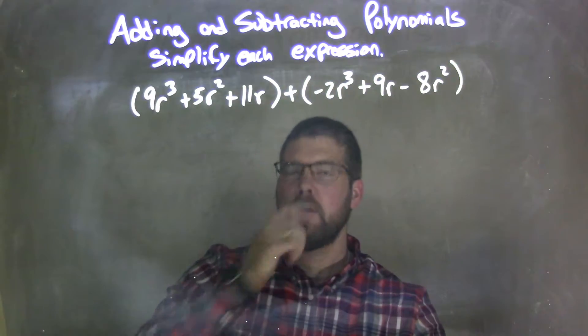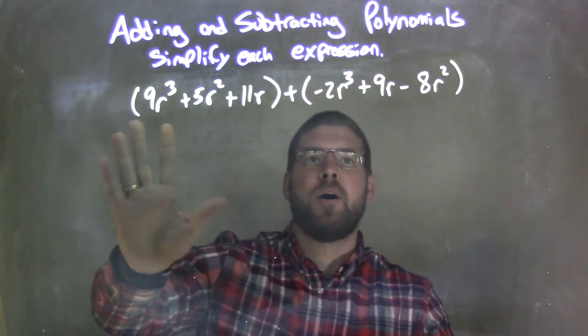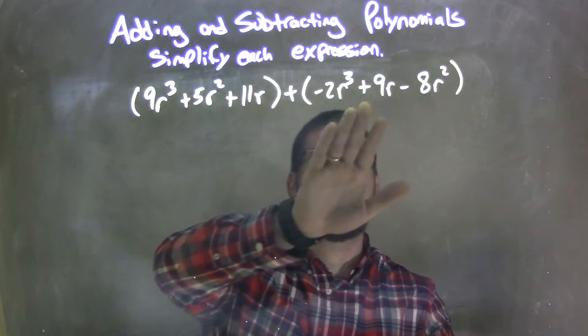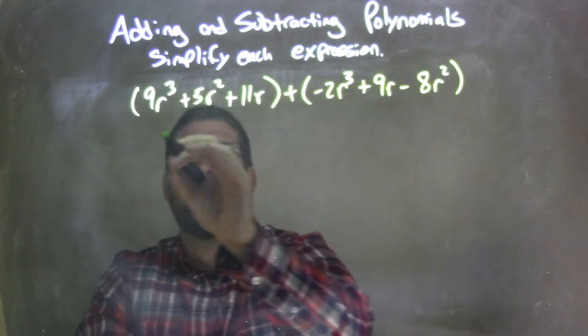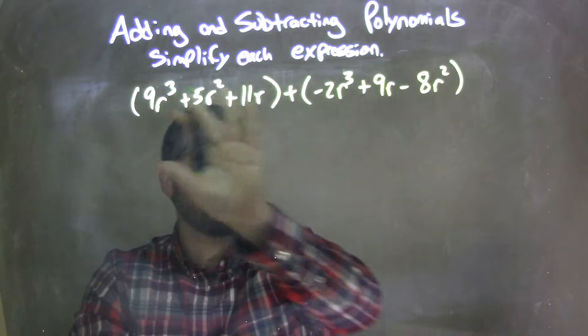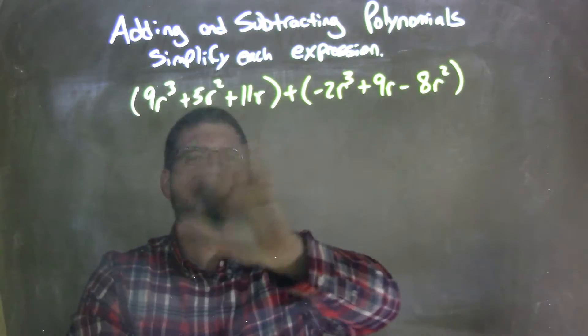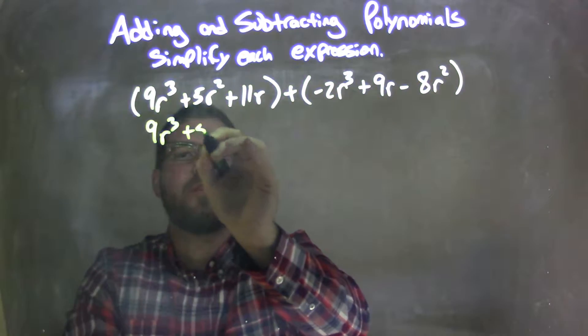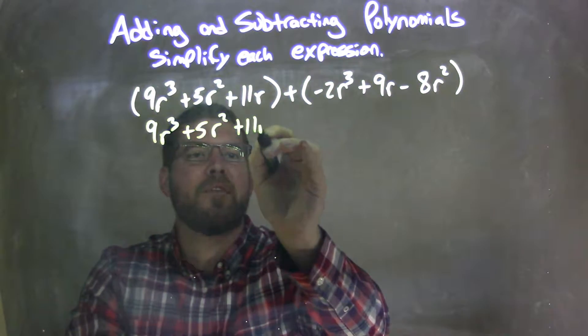Okay, so what I'm going to do now is I need to rewrite everything to be plus and negative, especially that down there. So I'm going to rewrite this, and in each parentheses we can't simplify anything, there's no like terms. So we have 9r³ plus 5r² plus 11r.